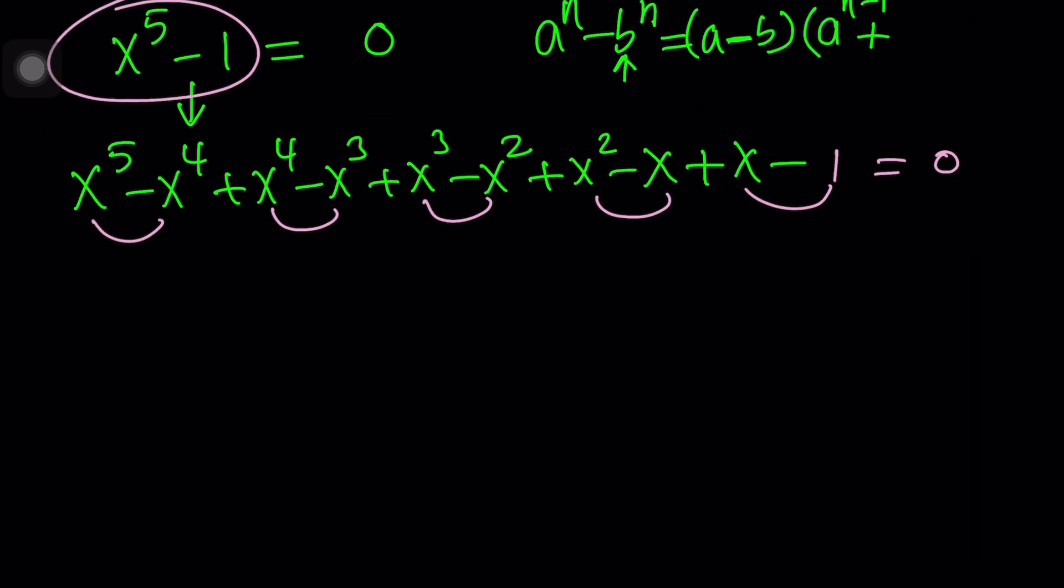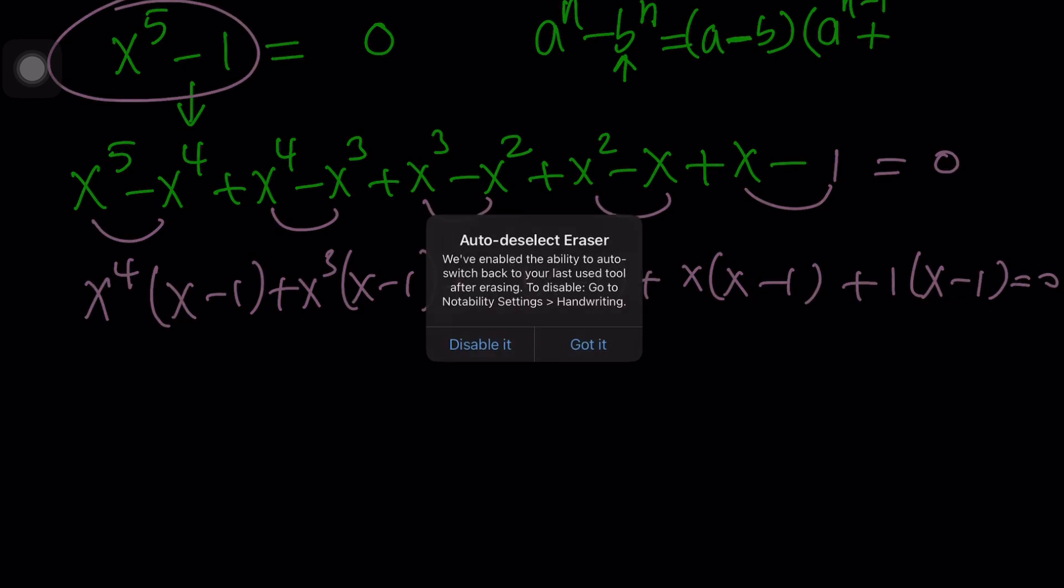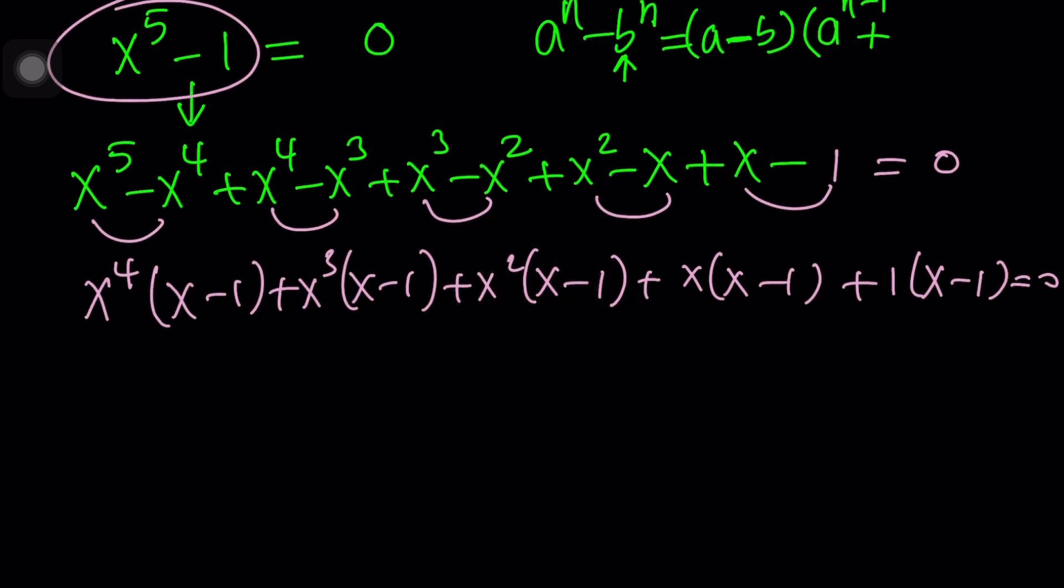You start with x to the fifth, and what should I subtract so that this is a multiple of x minus one? Obviously, this should be x minus one times x to the fourth. So, the next term you're going to write is going to be minus x to the fourth. And you keep doing it until you get to the very end. And because x minus one is a factor, this should always work out. Now, we can factor out x to the fourth times x minus one, and then x cubed times x minus one, and then x squared times x minus one, and then x times x minus one, and finally, one times x minus one.